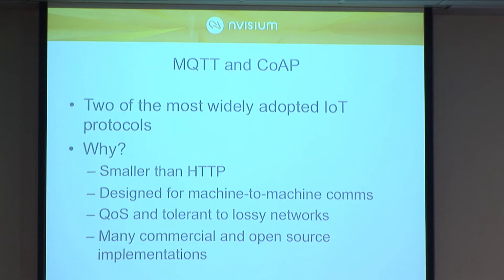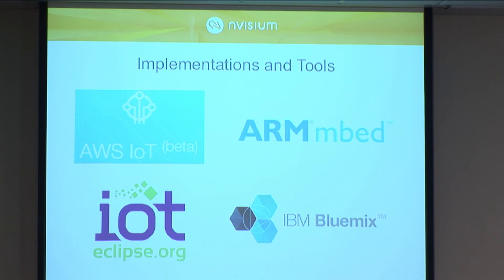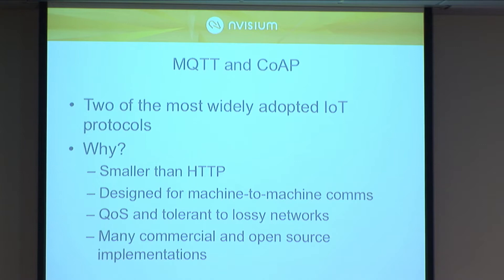MQTT stands for Message Queue Telemetry Transport. QoS is another reason these protocols are appealing. UDP is fire-and-forget, but CoAP has confirmable message types to ensure the endpoint received the message — important for something like pacemaker data. MQTT also has QoS built into the protocol itself, with different modes that we'll cover.